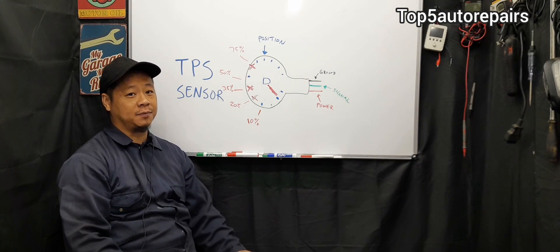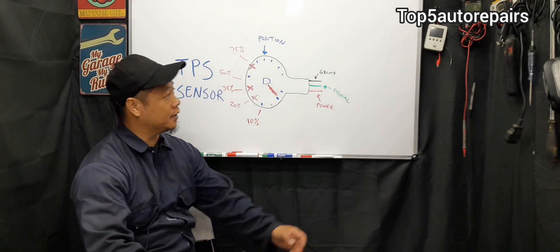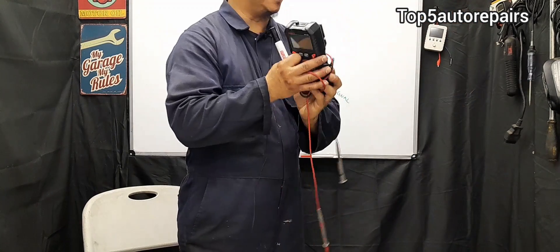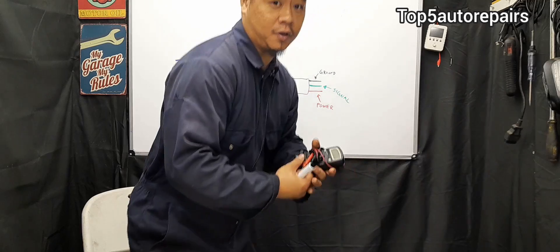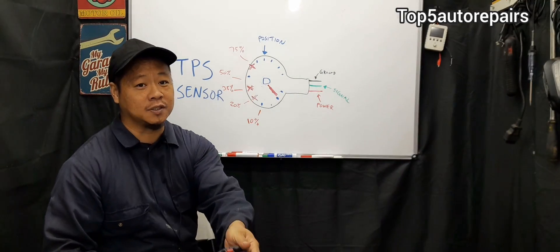Testing the TPS is very simple. All you need is a multimeter, like this one over here, or you can use one like this. And all you have to do is just set it to voltage.